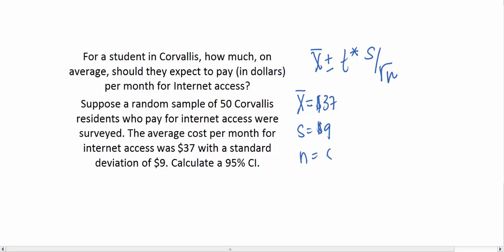If we want to calculate a 95% confidence interval, the T critical value will come from a T distribution with N minus 1 degrees of freedom, so 49 degrees of freedom.